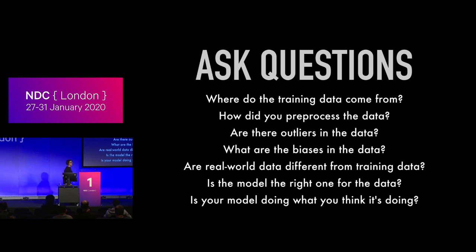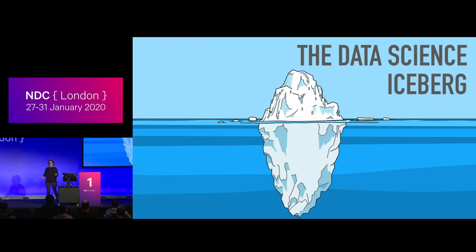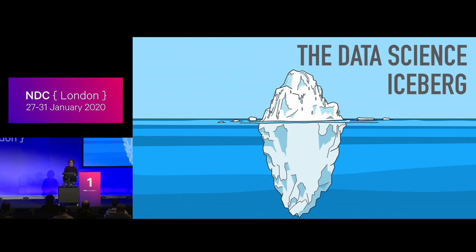Is your model doing what you really think it's doing? If you get numbers that look reasonable, people usually don't look deeper — but quite often the model zooms in on something you don't want it to. For me, data science is like an iceberg: the visible top is doing the cool machine learning, the one-liner from scikit-learn, the stuff from courses. But the bottom of the iceberg is all the data work — data preprocessing, data cleaning — which is not sexy, not automated, and requires a lot of domain knowledge.